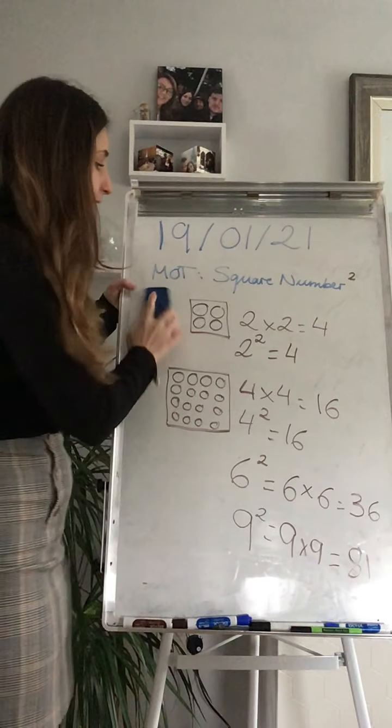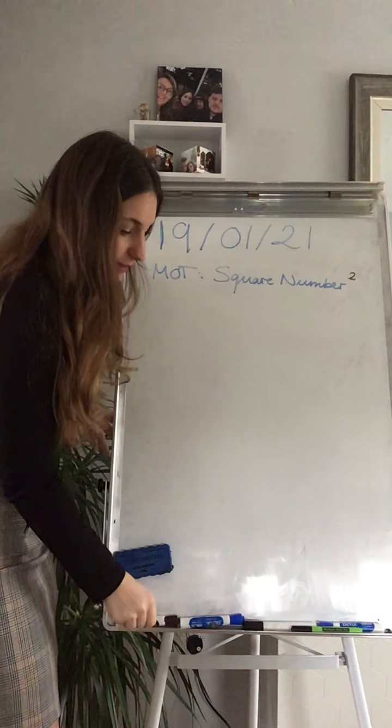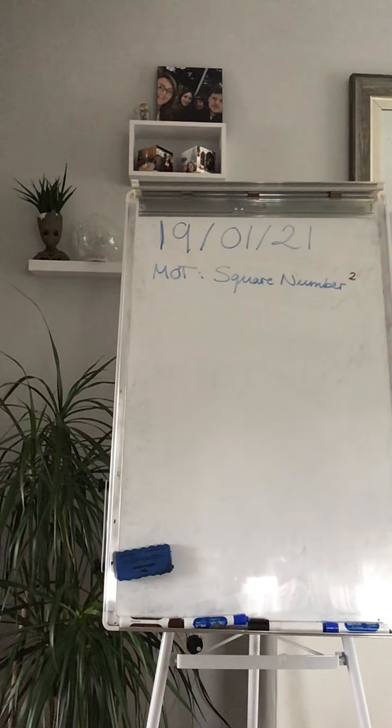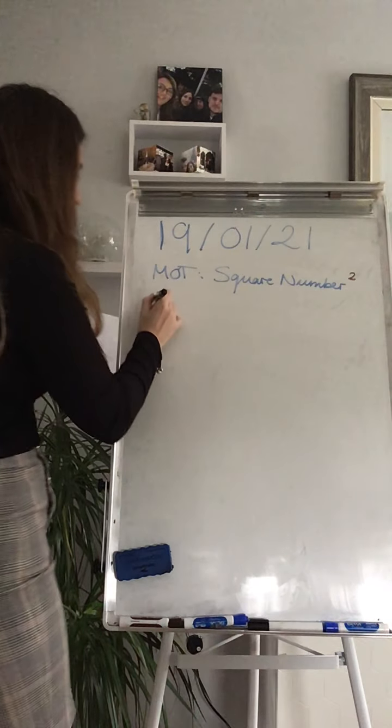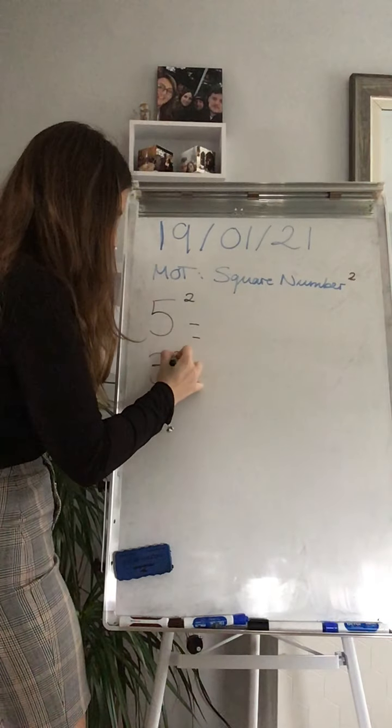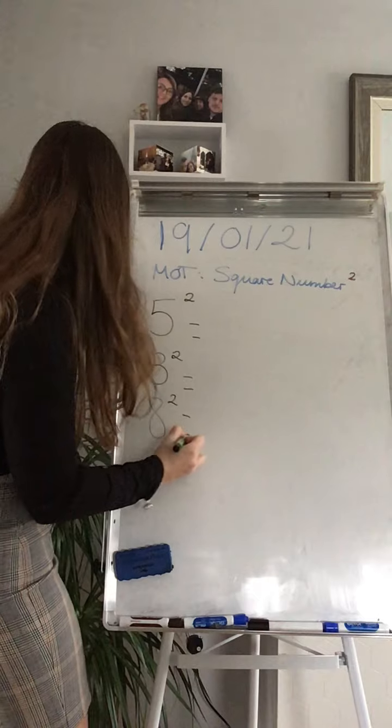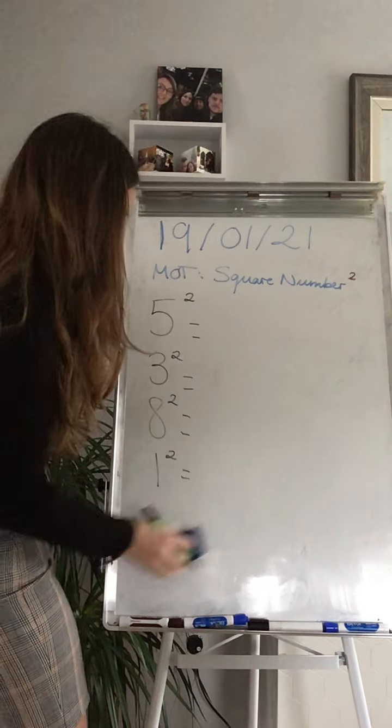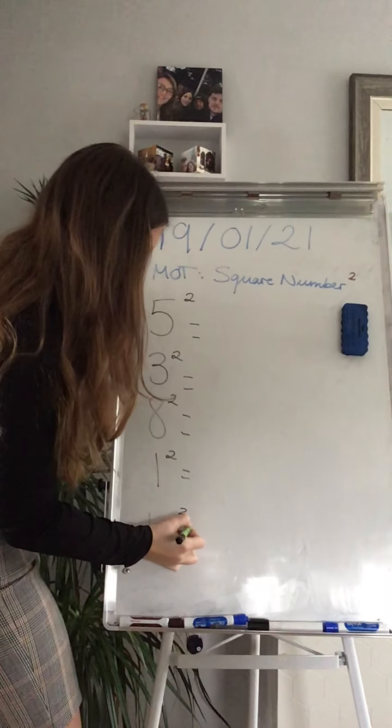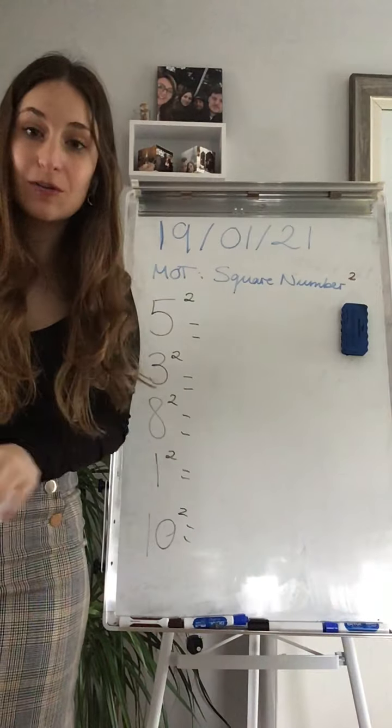Can you find today, your work is going to be, can you try to find the answer of these square numbers? The first one that you need to find is 5 square, 3 square, 8 square, 1 square, and the last one, 10 square. Have a go at it and I'll see you tomorrow when we correct it. Adios!